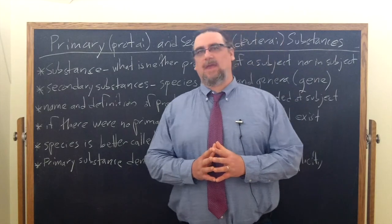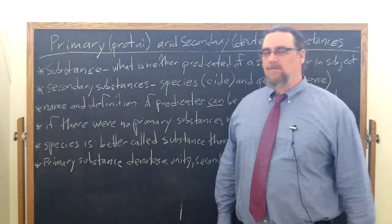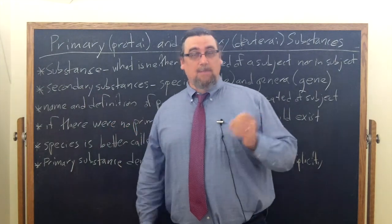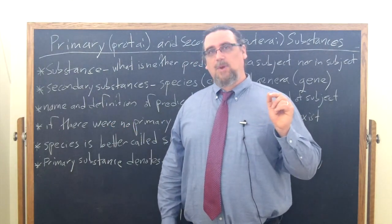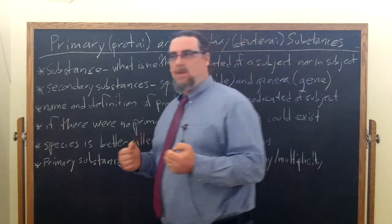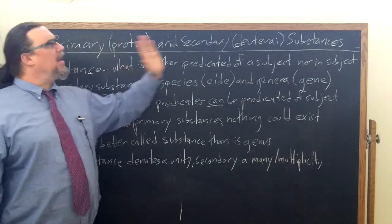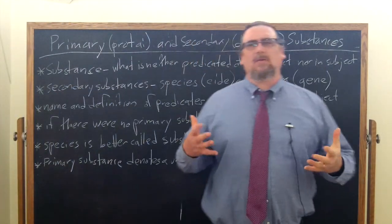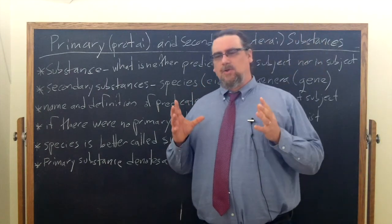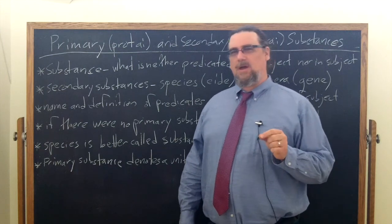In Chapter 5 of the Categories, Aristotle is going to give us a much more in-depth examination of substance. One of the key distinctions that he's going to make, which has a lot of implications that he draws out, is that between what he calls primary and secondary substances. The term substance is ousia, and primary and secondary — protai and deutrai — just means first and second. He says that some substances, some ousiai, deserve the name or notion of substance much more than others do.